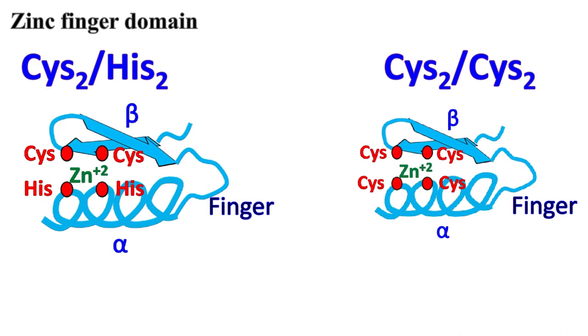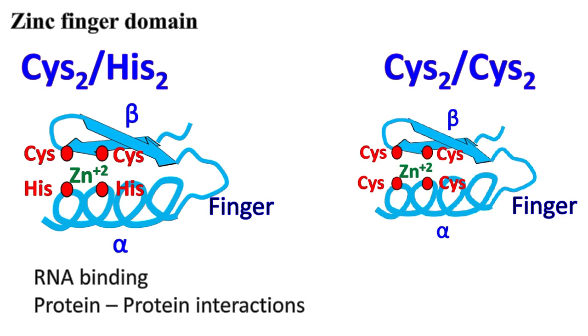The cysteine 2-histidine 2 class of zinc finger can have a variety of functions such as RNA binding and mediating protein-protein interaction.